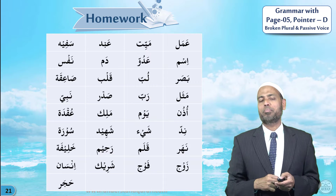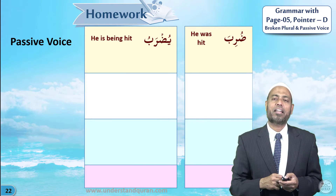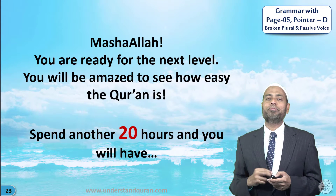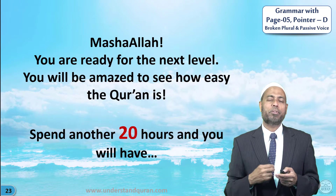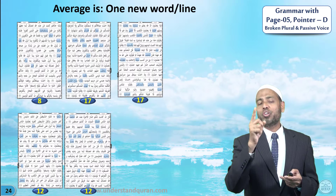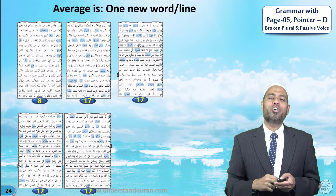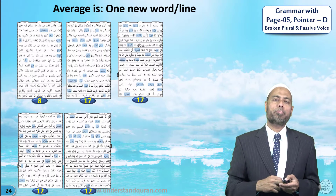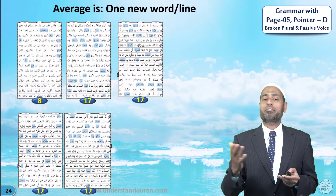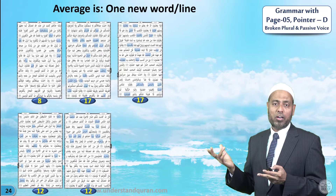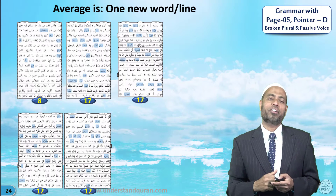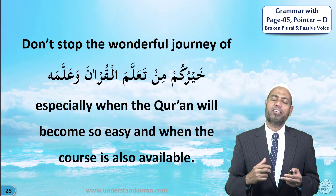Now you have homework: write the broken plurals of the asma you have studied in class, and do a passive voice exercise for the verb daraba — yadribu, passive: duriba — yudrаbu. MashaAllah. You are ready for the next level. You will be amazed how easy the Quran is. Spend another 20 hours and you will have on average only one new word per line after finishing the next course. Here are five pages starting from page 11 of Suratul Baqarah. After the next course pages 6–10, you will study pages 11–15, with new words averaging less than 15 per page — less than one new word per line.